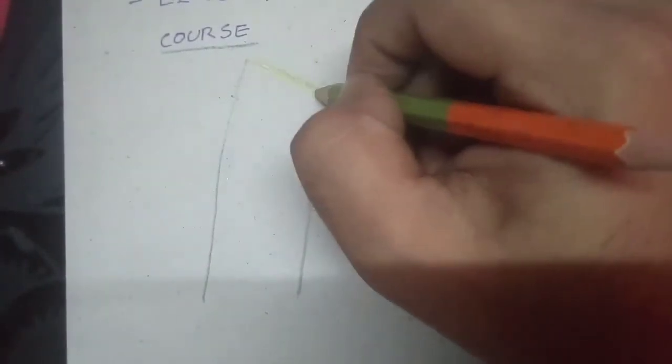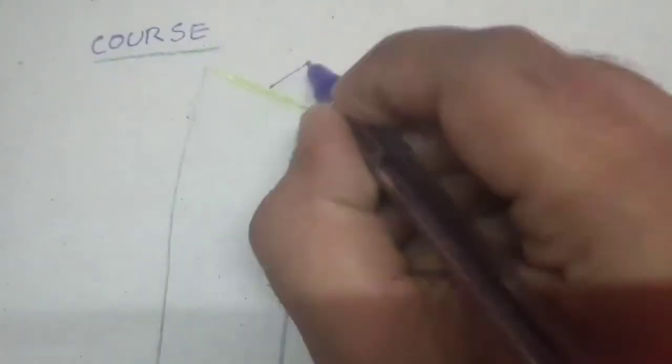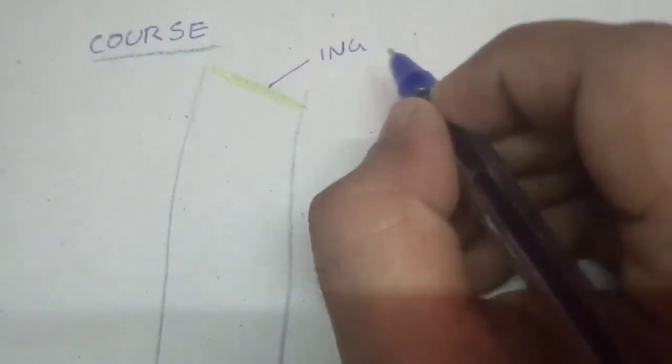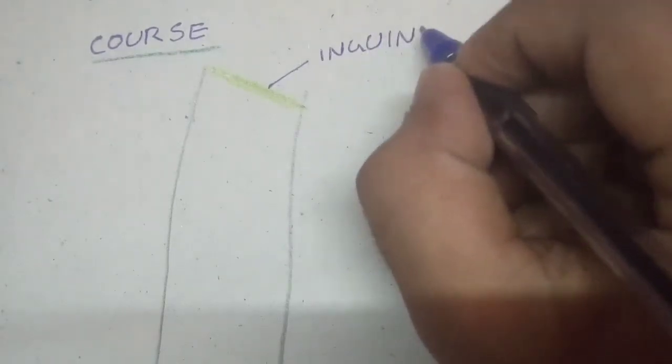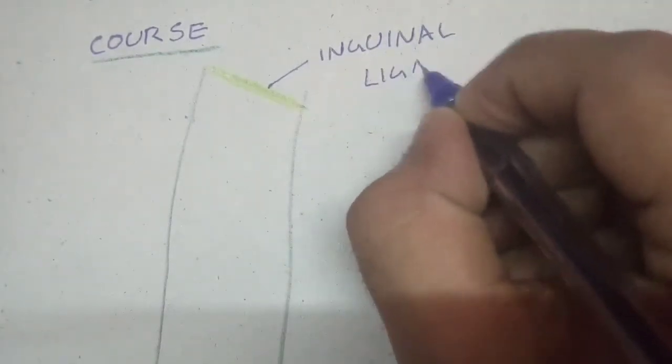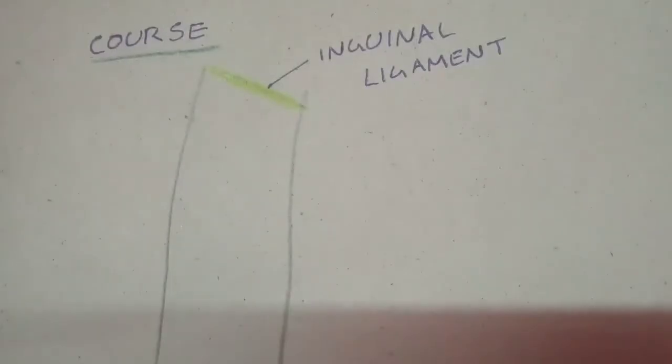Now we can discuss the course. First, we need to know this is the right leg. You all know about the femoral triangle — if you want a section on the femoral triangle, let me know in the comment section. In the anterior part of the thigh, the green line represents the inguinal ligament, which has a key role in the course of the femoral nerve.